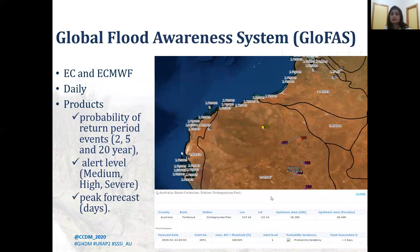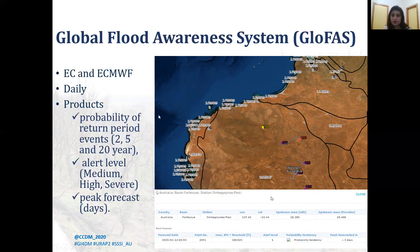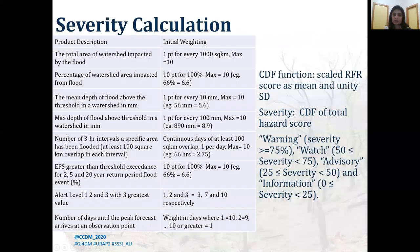The second flood forecast model, GLOFAS, is developed jointly by the European Commission and the European Centre for Medium-Range Weather Forecasts, and is also independent of political boundaries. The GLOFAS output is point data with information on upstream river conditions. The ensemble predictions of events with return periods of 2, 5, and 20 years, alert level (medium, high, or severe), and peak forecast in days are utilized to generate the hazard score for each watershed.